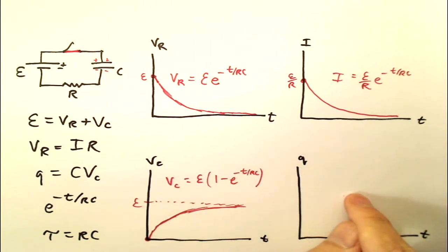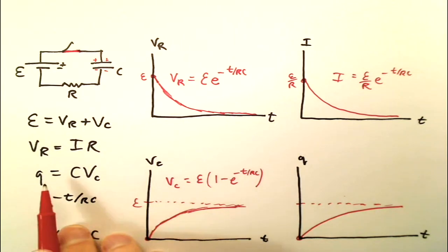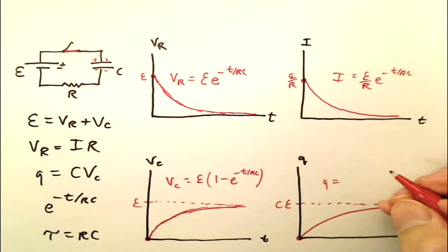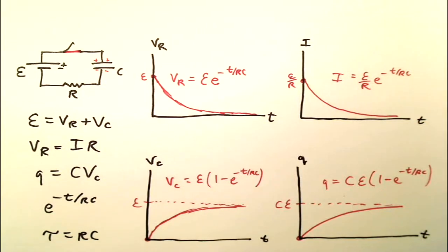Similarly, the graph for Q is going to look much the same as the graph for VC because those two things are proportional. So we're going to have an asymptote. The Q is going to start at zero, and it's going to climb asymptotically. And what's this value of the asymptote going to be? Well, here it was E, and that's the voltage. The Q is equal to C times the voltage, so we just take the voltage and multiply by C, and there you have it. So Q is equal to CE times one minus E to the negative T over RC.